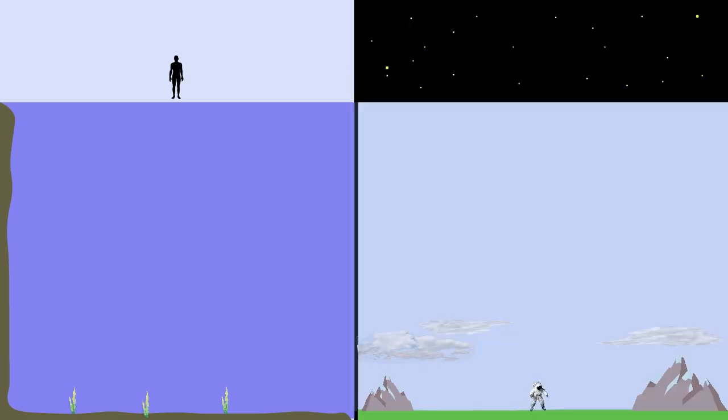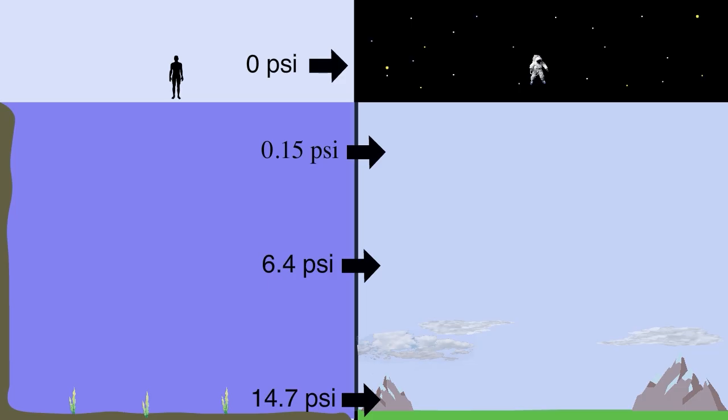Likewise, when you're ascending in the atmosphere, there is less atmospheric gases pushing down on you, decreasing the pressure. Once you're in space, above Earth's atmosphere, there are no gases, so there is zero atmospheric pressure, which is a vacuum.